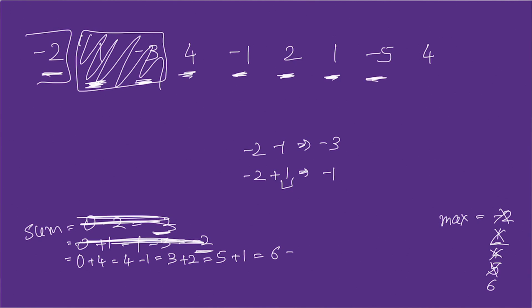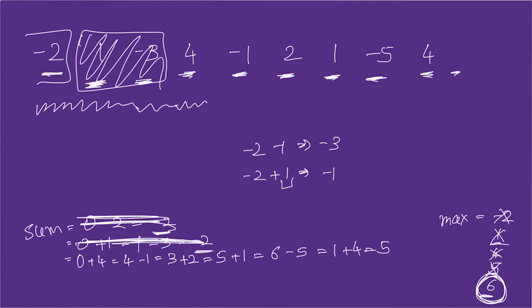Next minus five: sum becomes one, smaller than max of six, no update. Final element four: sum becomes five, still smaller than max six, no update. We've run out of elements and six is our final max. To summarize: keep adding elements as long as the sum stays positive; the moment it goes negative, reset to zero and restart. Track the maximum seen throughout, and that gives you the subarray with the maximum sum.